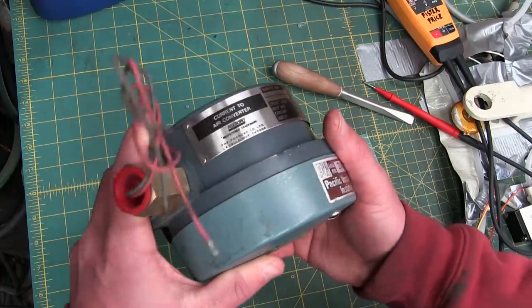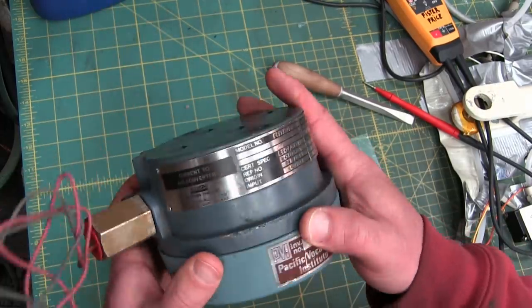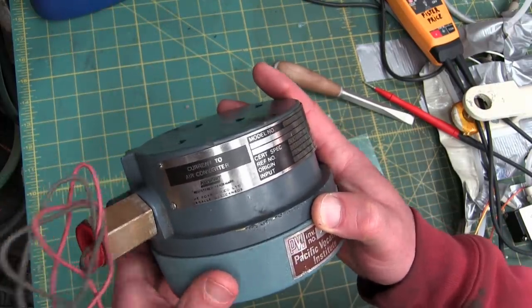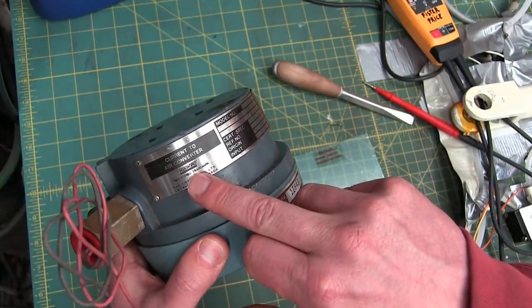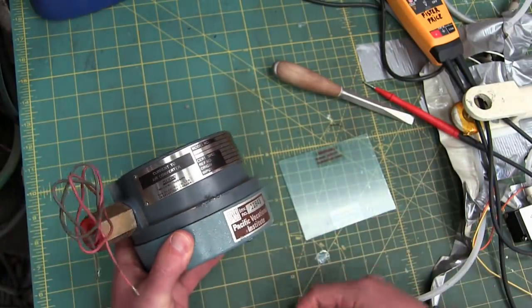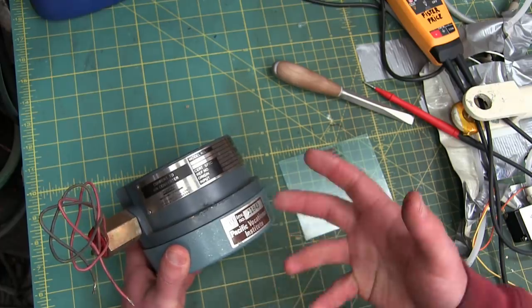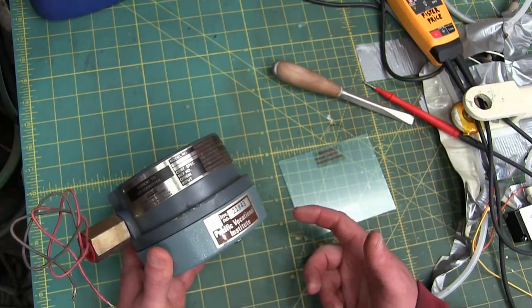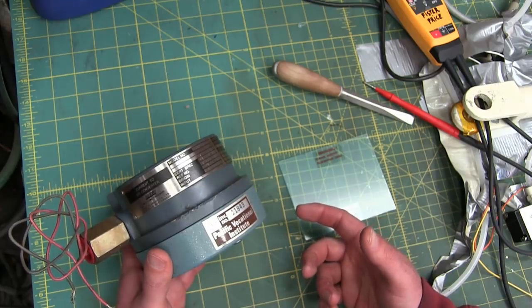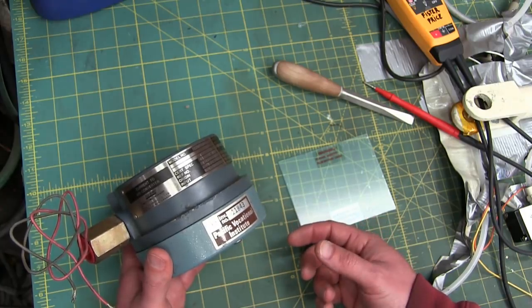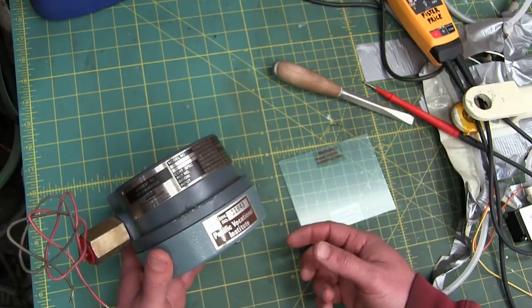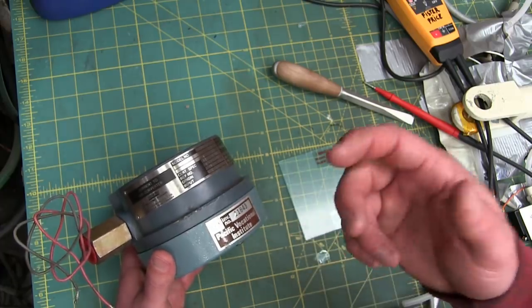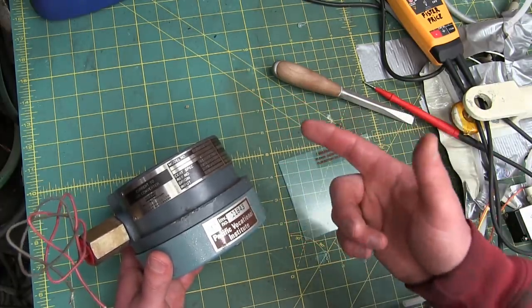What we have here is a transducer, but they call it a current to air converter. This is made by Foxborough. Foxborough got bought out by Schneider Electric. Schneider Electric is huge in the PLC business but it's a massive 50 billion dollar French conglomerate.